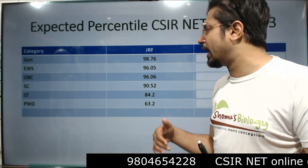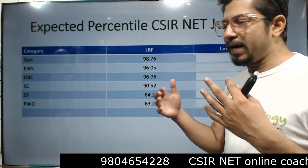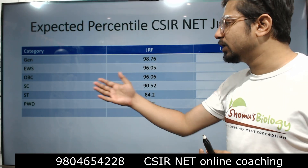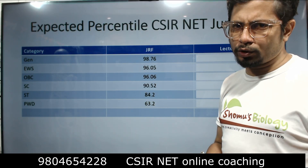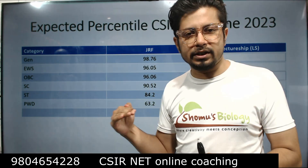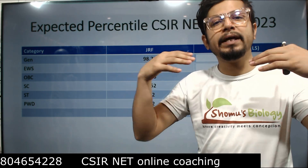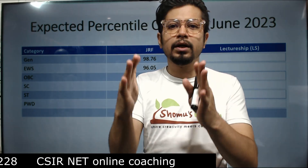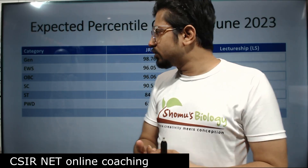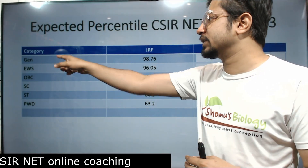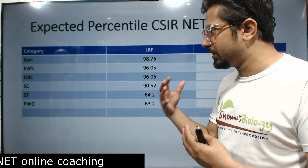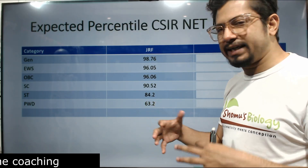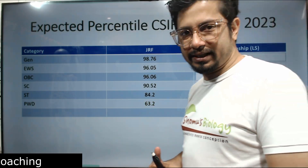All these percentile scores are for GRF across different categories. The maximum is for General or Unreserved category at 98.76, and the least is for PWD category at 63.20. The more candidates apply for a particular group, the higher the cutoff. Most people apply for the General category, so the cutoff is always highest there. PWD has the fewest applicants, hence its lower percentile cutoff.